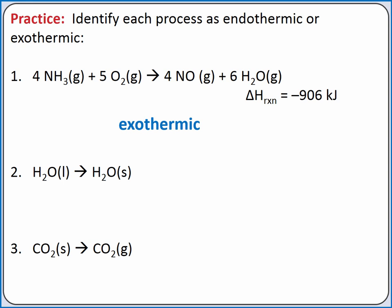In our second example, we have liquid H2O becoming solid H2O. This is the process of freezing. In order to freeze water, we need to put the water someplace cold, like a freezer. So the water will transfer some of its thermal energy to the surroundings. When a process transfers thermal energy to the surroundings, it is exothermic. So when we change state from gas to liquid to solid, it's exothermic.